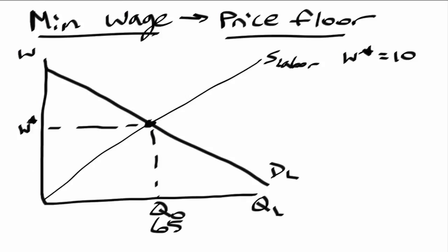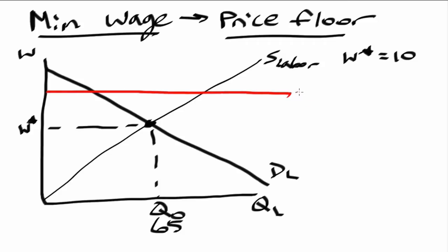Now let's think about what happens when the government comes in and imposes a minimum wage. In order for a minimum wage to be effective, it needs to be a binding price floor. It can't be too low, because then we would just have this overall equilibrium go in place. We have to set it higher than the equilibrium wage — that could be right there. So this is going to be our minimum wage.